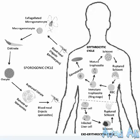When the mosquito bites a human, it injects sporozoites. Now the asexual cycle starts.